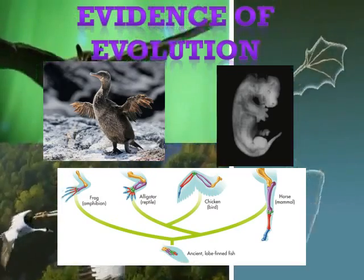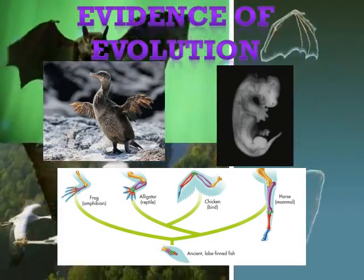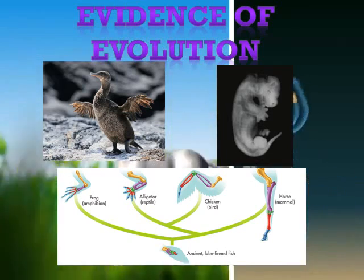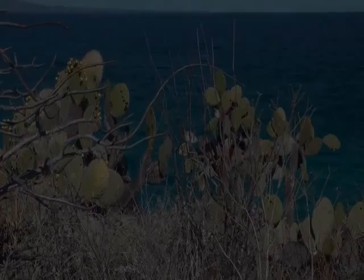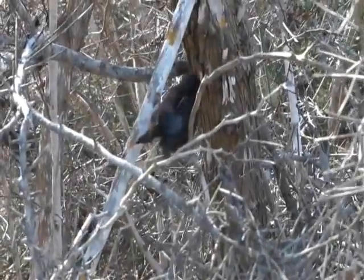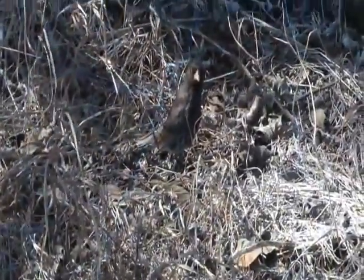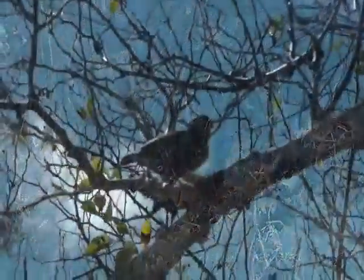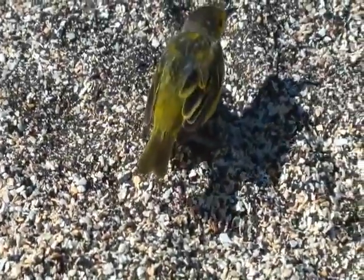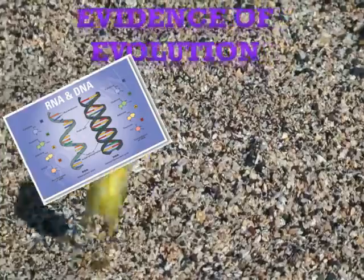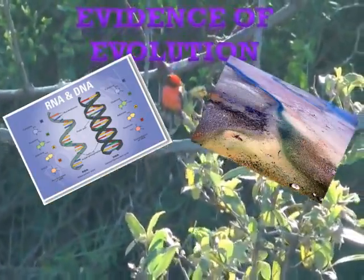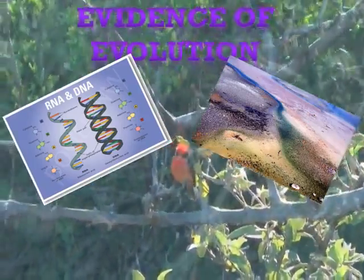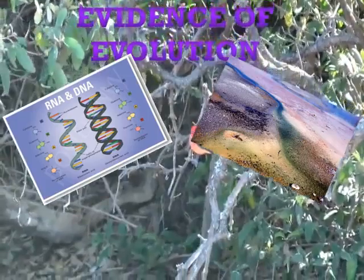Similar patterns of embryological development provide further evidence that an organism has descended from a common ancestor. The most troublesome missing information for Darwin had to do with heredity. Darwin had no idea how heredity worked, and he was deeply worried that this lack of knowledge might prove fatal to his theory. At the molecular level, the universal genetic code and homologous molecules provide evidence of common descent.